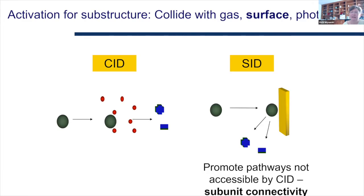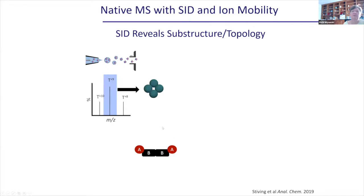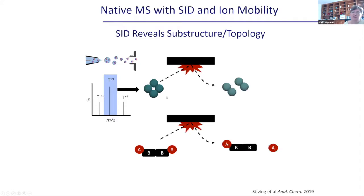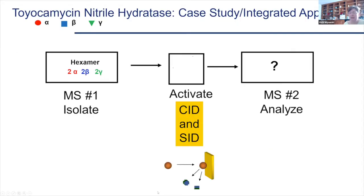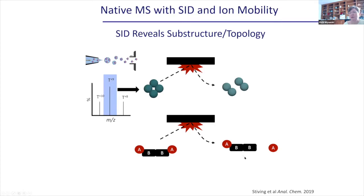Mass spectrometrists think about structure differently from cryo-EM practitioners — we don't expect atomic resolution, but we do get useful connectivity information. If I take two different tetramers: a dimer-of-dimers type structure gives dimer products with SID, revealing the connectivity. For the other tetramer where the weaker interface is the alpha-beta rather than beta-beta, we get monomer and trimer products. CID with gas collisions would have given monomer-trimer for both cases, making SID the more informative technique for determining subunit connectivity.